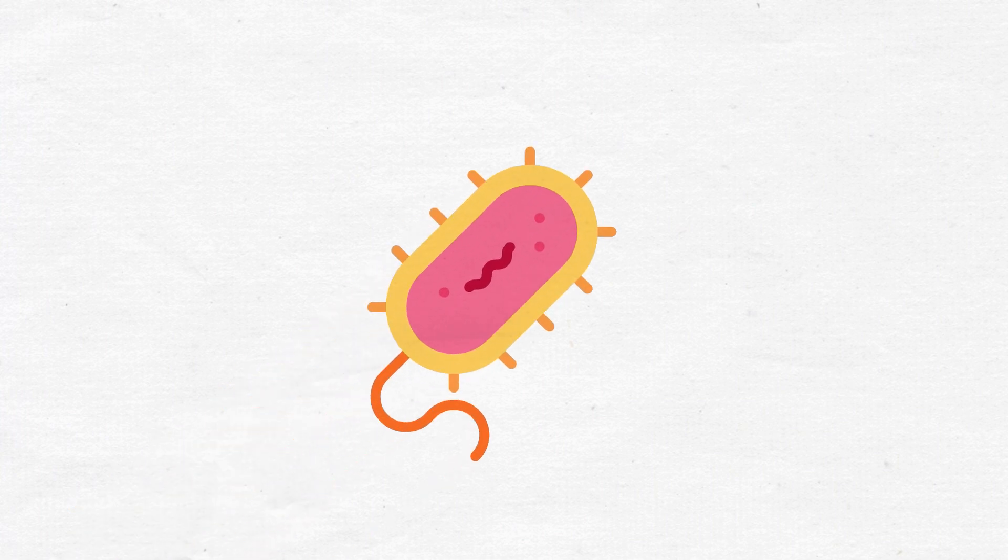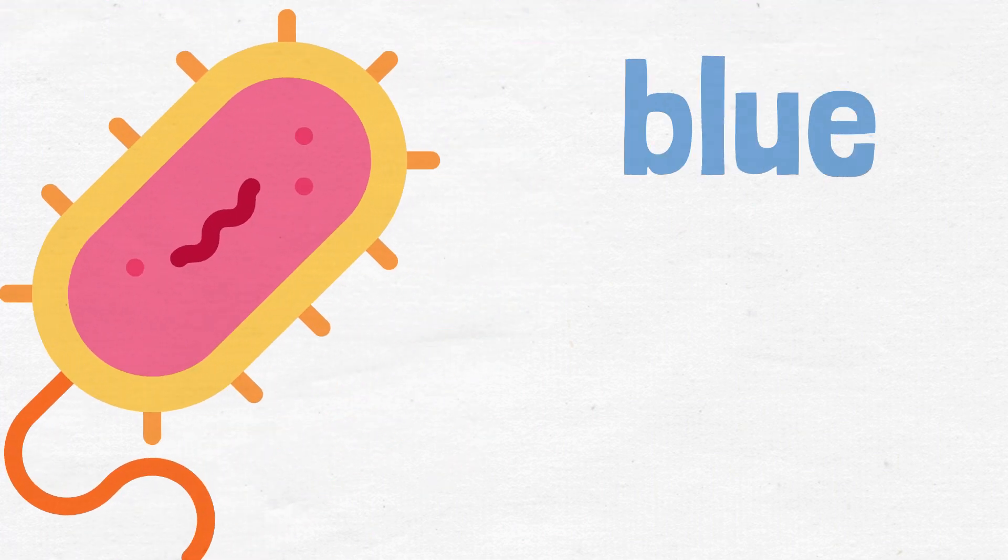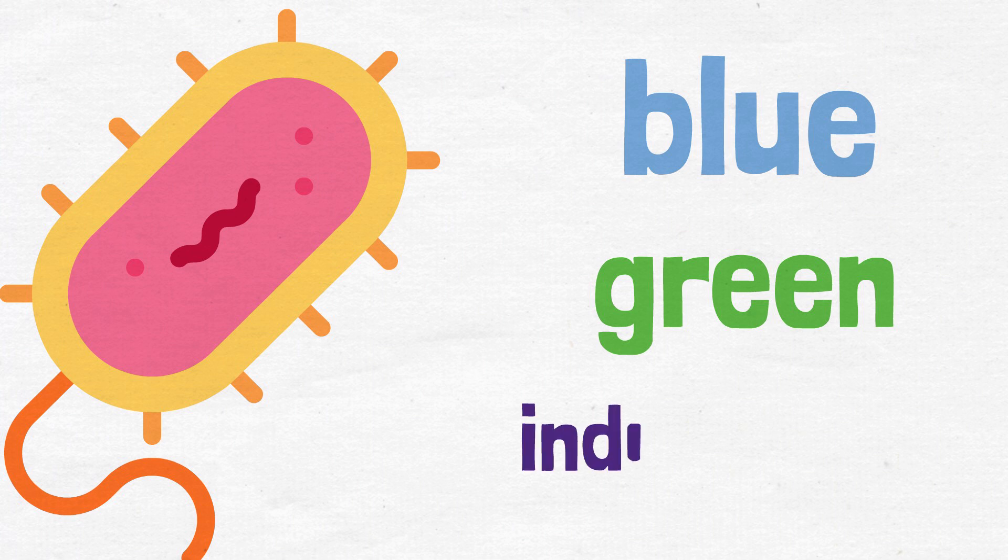The Pseudomonas aeruginosa bacterial infection can also cause your urine to turn blue, green, or indigo purple.